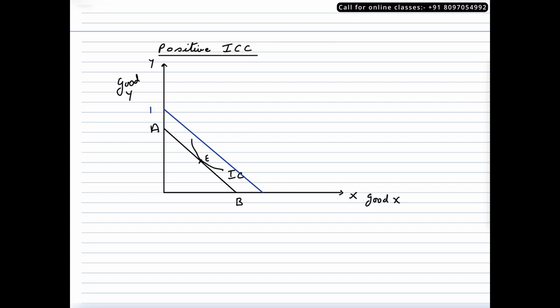The new budget line is A1B1 — it should be parallel to AB. When a consumer's income increases, he is now capable of buying more of both commodities. He should be somewhere on the new budget line, say the new indifference curve IC1 tangent at E1, which is the new equilibrium. If the income increases again, the budget line shifts outwards to A2B2. The consumer is at a higher indifference curve IC2 at equilibrium E2, since his ability to buy both goods has increased.